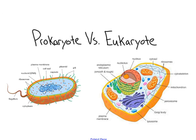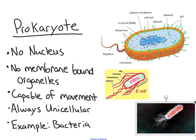What we are going to do now is define just what two different types of cells look like. The two biggest categories of cells that differ from each other would be prokaryotes versus eukaryotes.